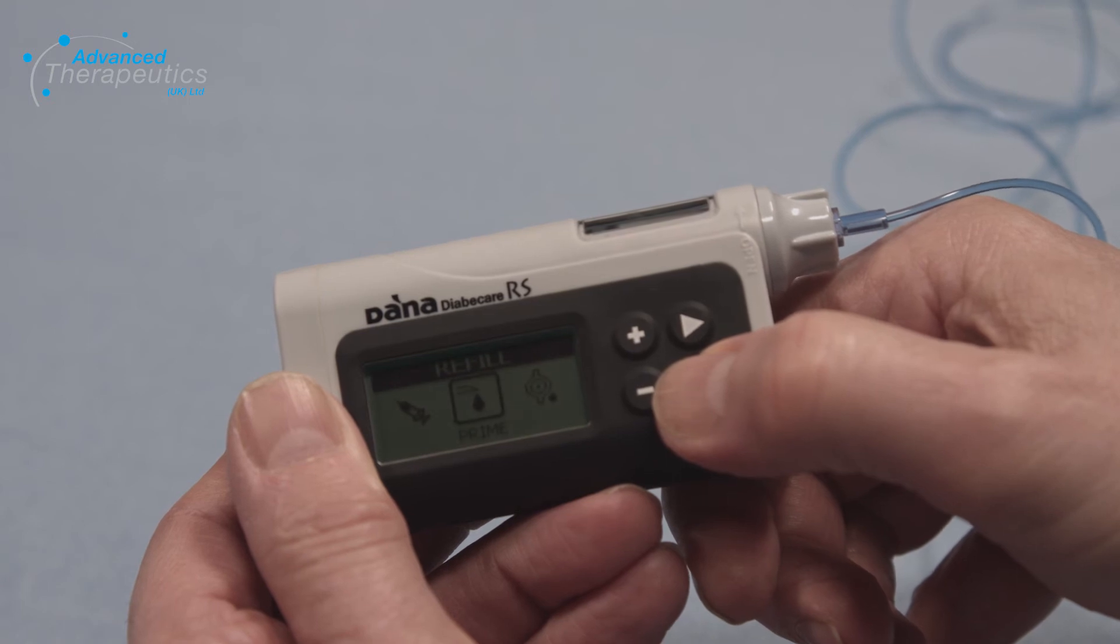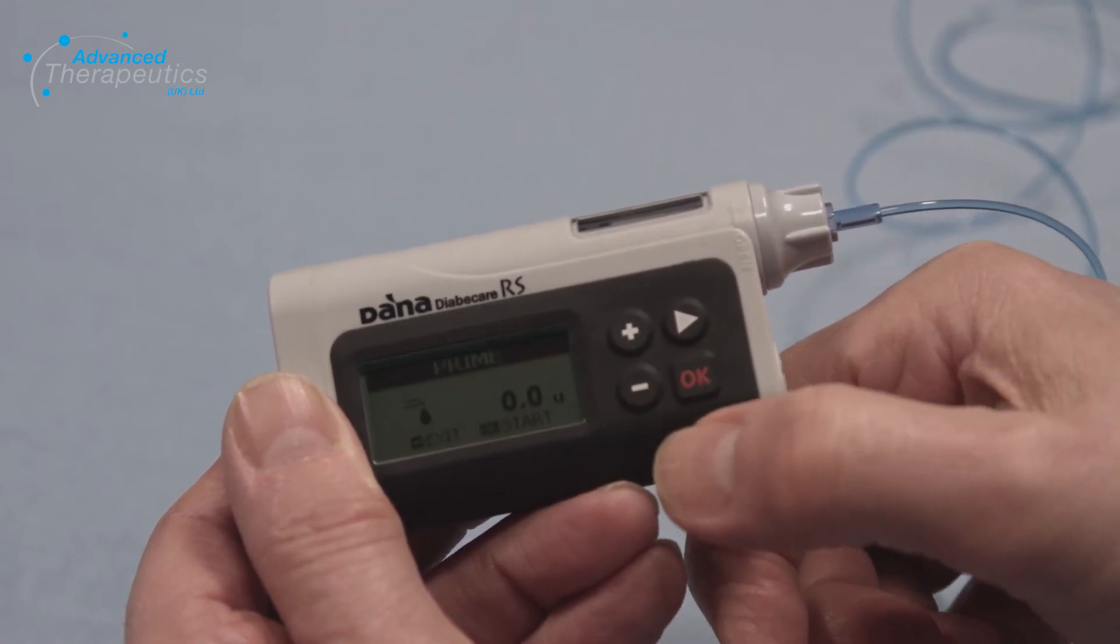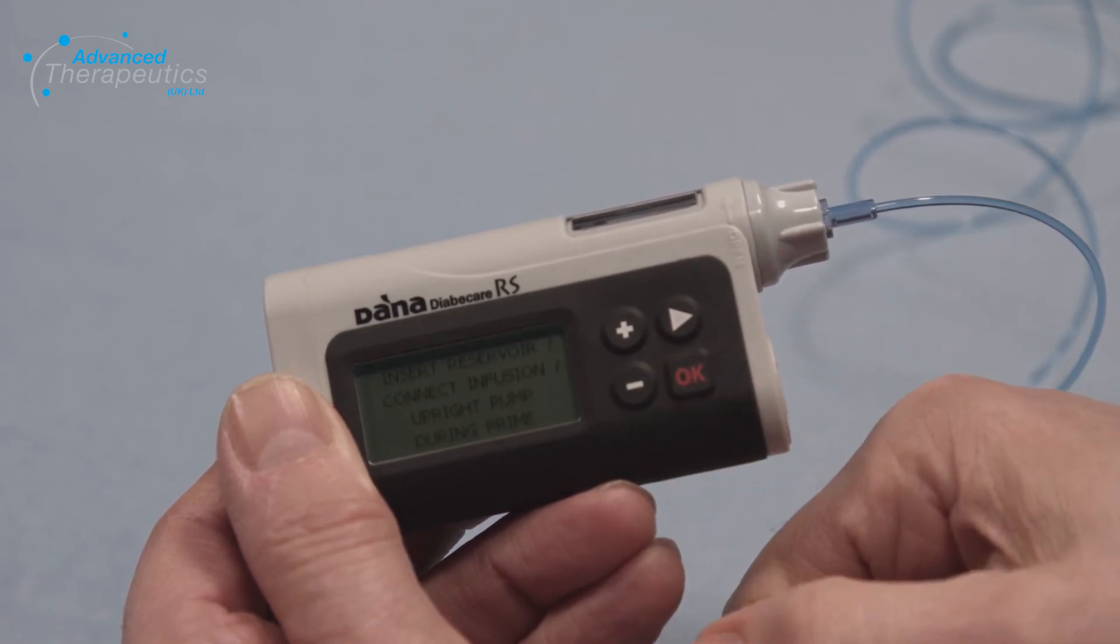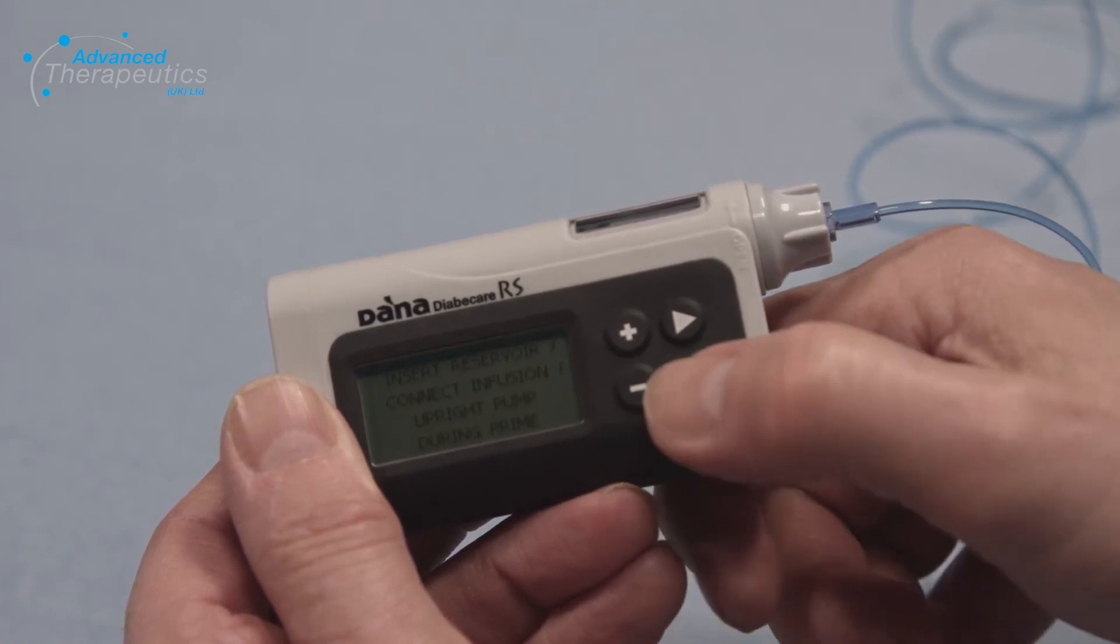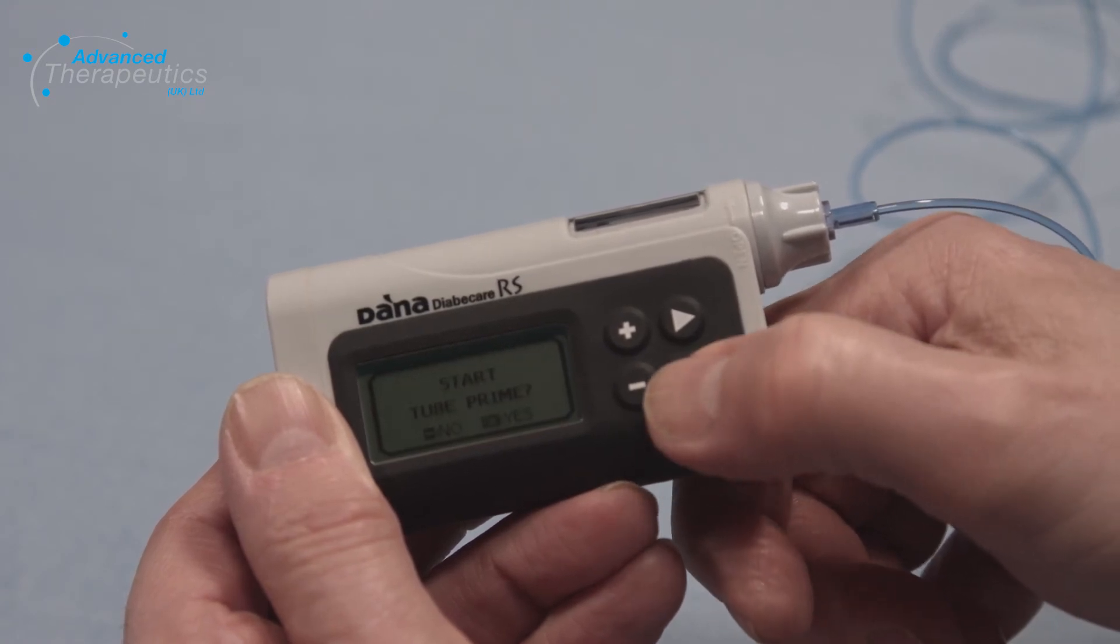The pump will now show prime. Press OK and then OK again. Instructions will ensure the reservoir is inserted and will guide you to hold the pump upright during priming. Press OK and then OK again to start the tube prime.